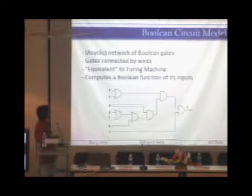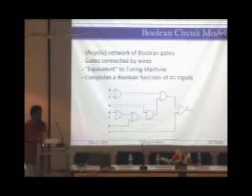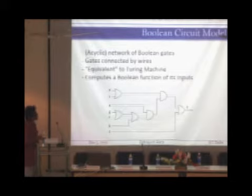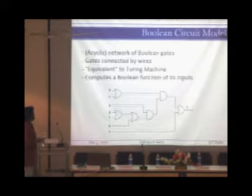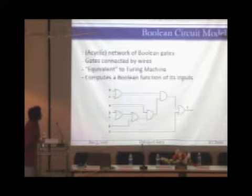This is equivalent to the Turing machine — for those who haven't heard of a Turing machine, it's a machine model which roughly captures the programs that we write today. Any computation can be represented as a Turing machine. So a circuit essentially captures any computation, and any computation can also be captured by a Turing machine. Clearly, since all of these are Boolean gates, this whole circuit computes a Boolean function at its inputs.